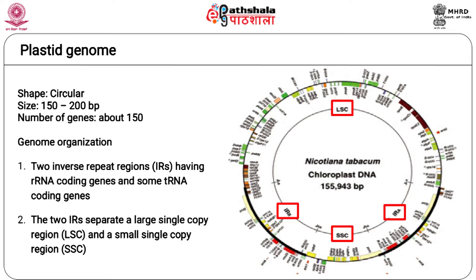Chloroplasts have their own genome and protein synthesis machinery, both of which have typical prokaryotic features. The chloroplast genome is double-stranded circular DNA that is about 150 to 200 kb in size. The chloroplast genome is present in multiple copies in a single chloroplast, and a leaf cell may have approximately 10,000 copies of chloroplast DNA. Chloroplast genomes are highly conserved and show very little recombination.